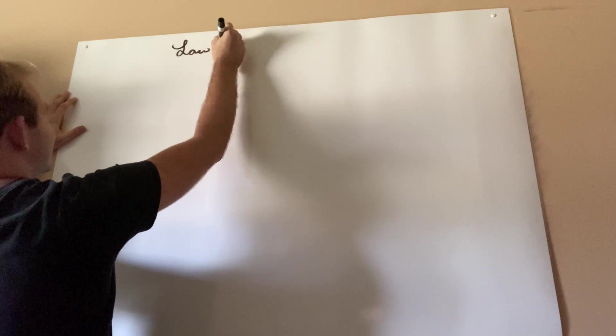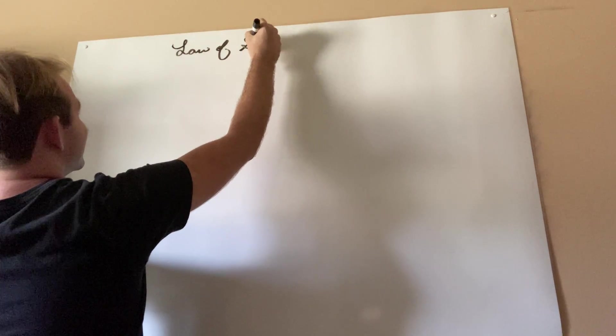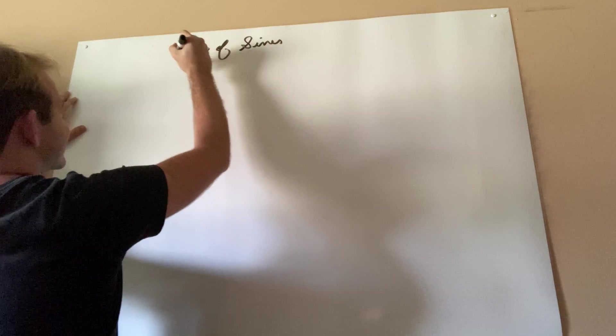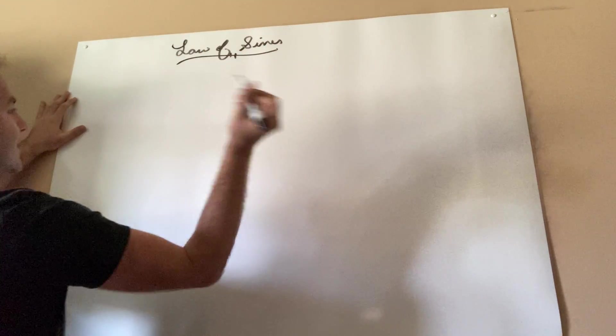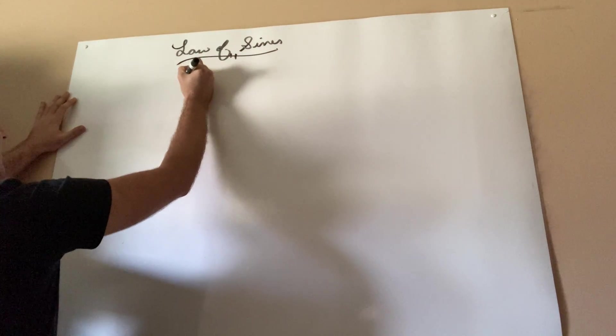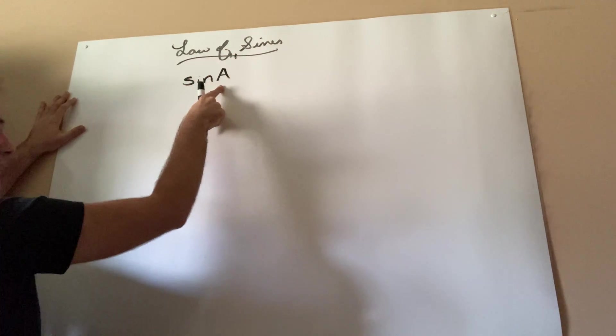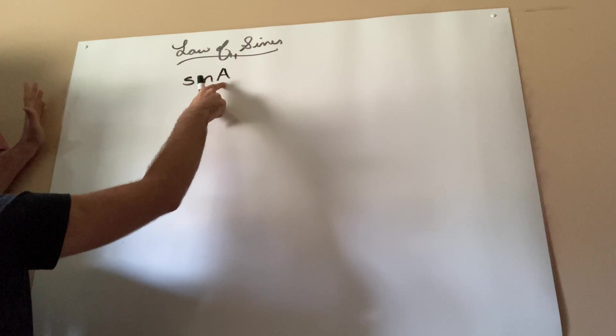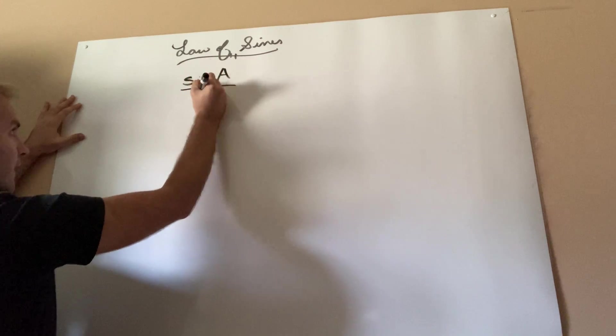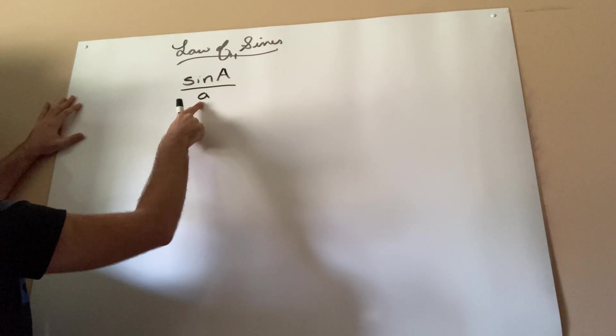So first let's go over a very basic working definition of the law of sines. What the law of sines says is that the sine of an angle, I'm just calling it a, but it could be any angle, over the side it's across from,